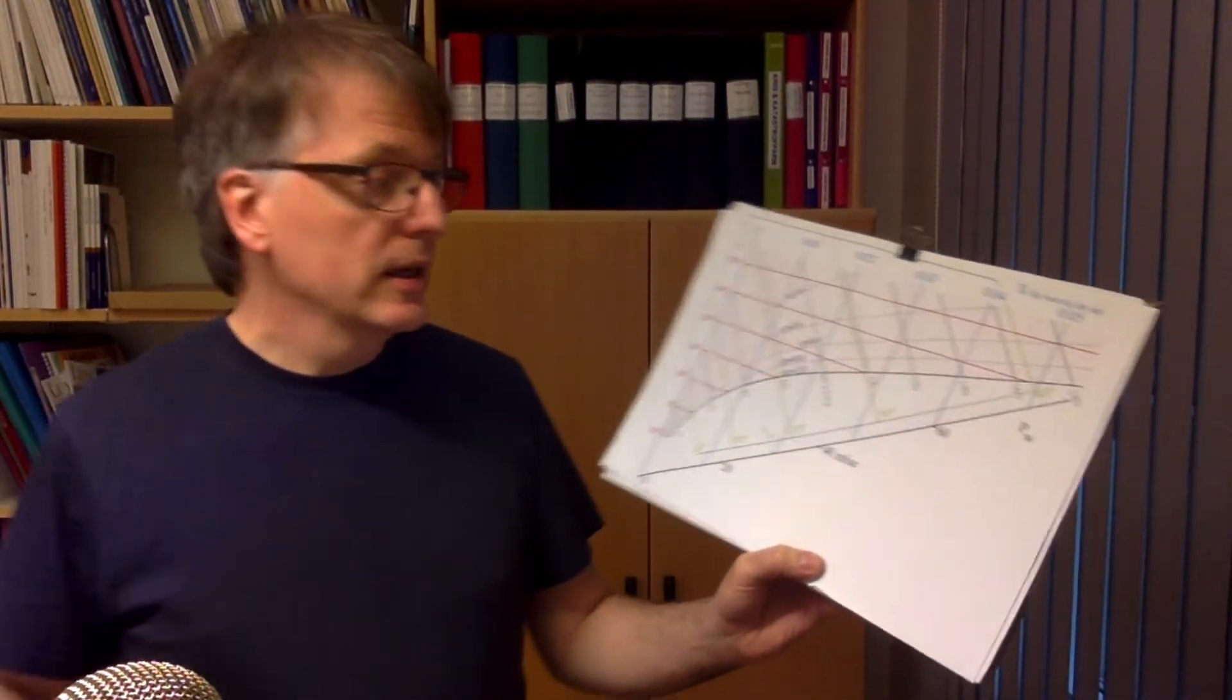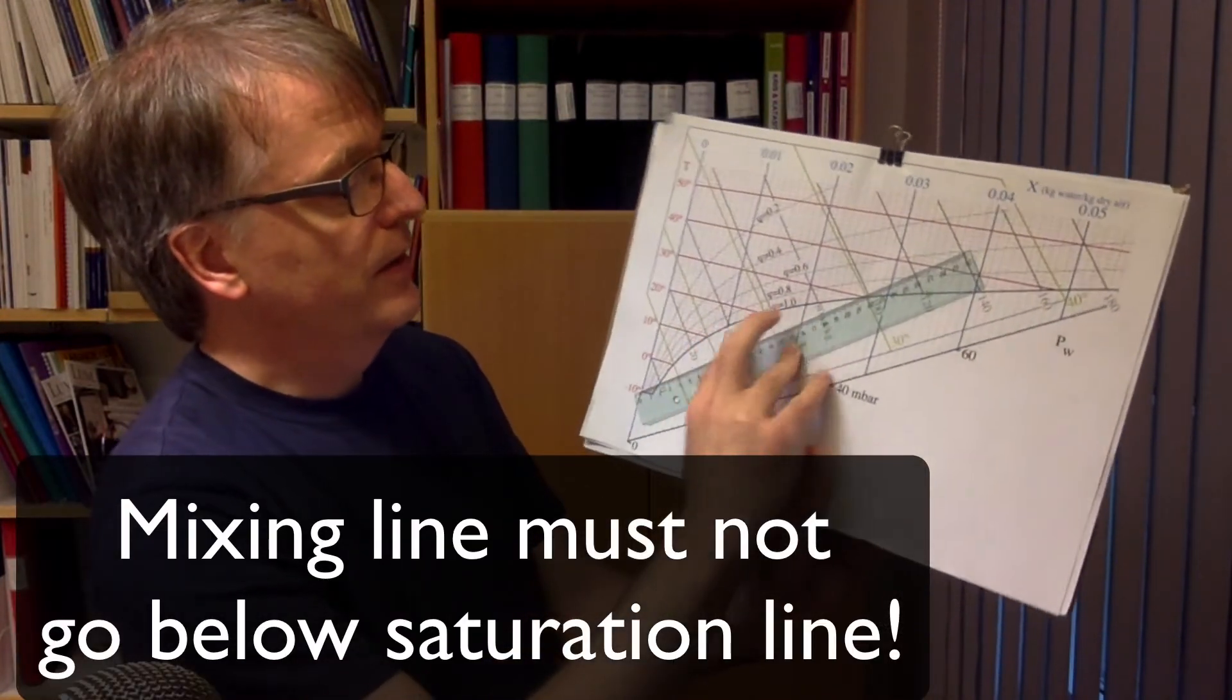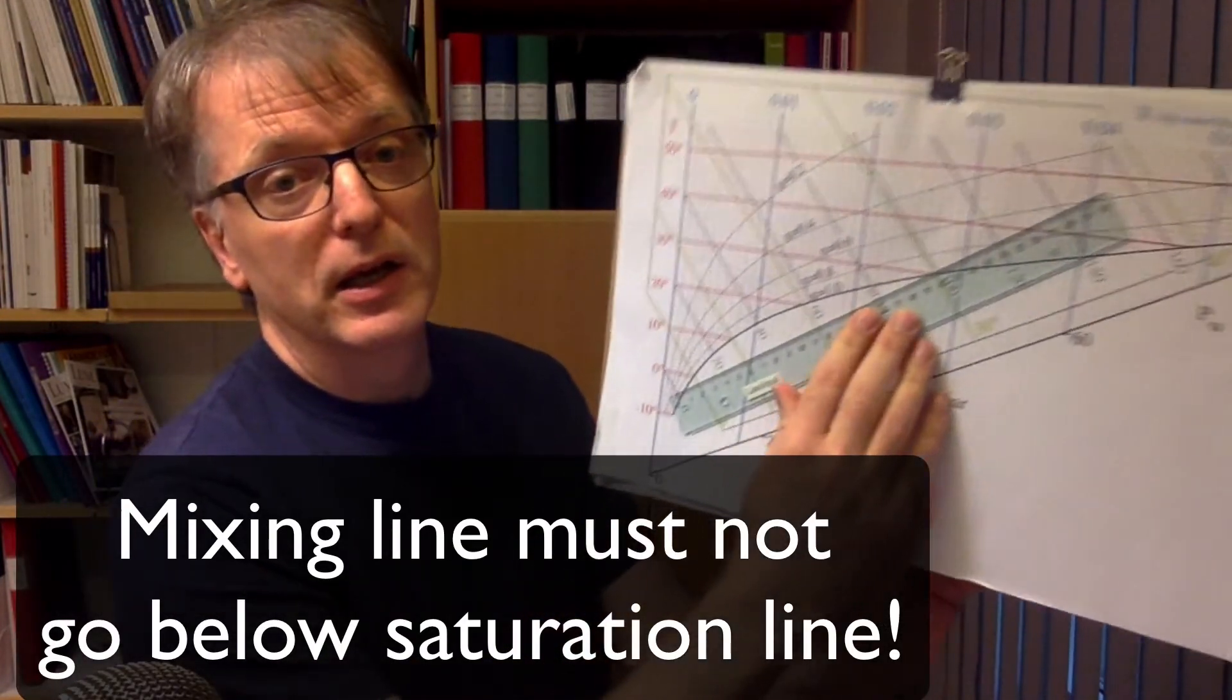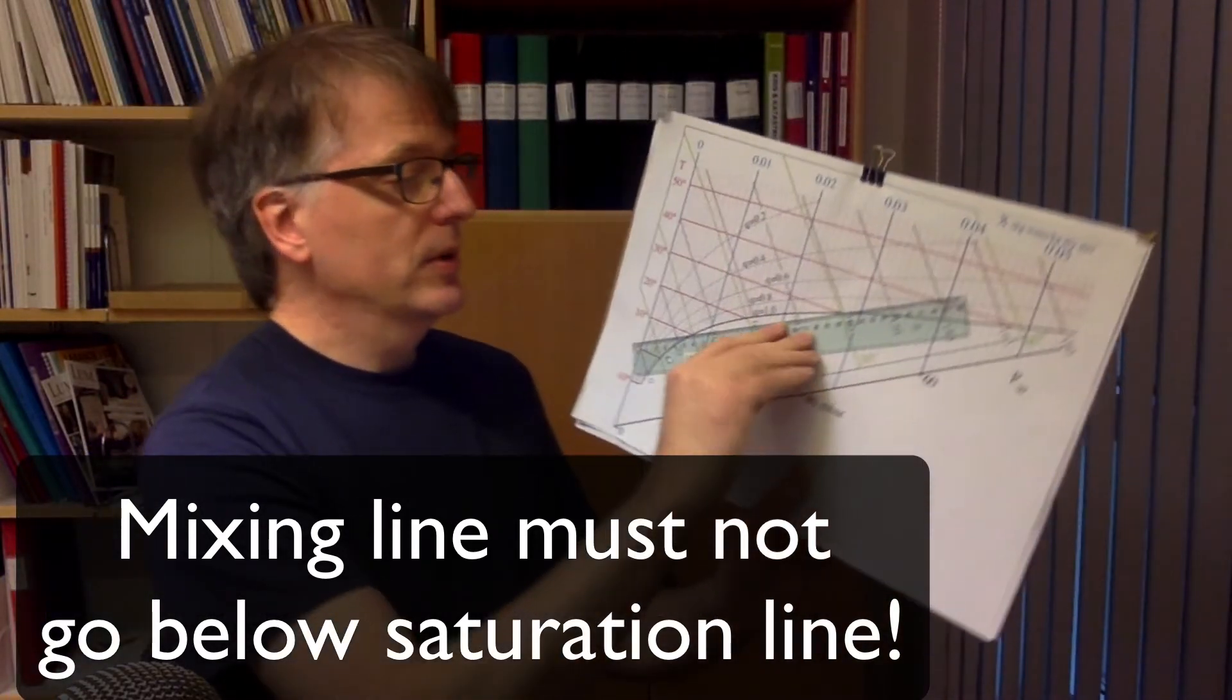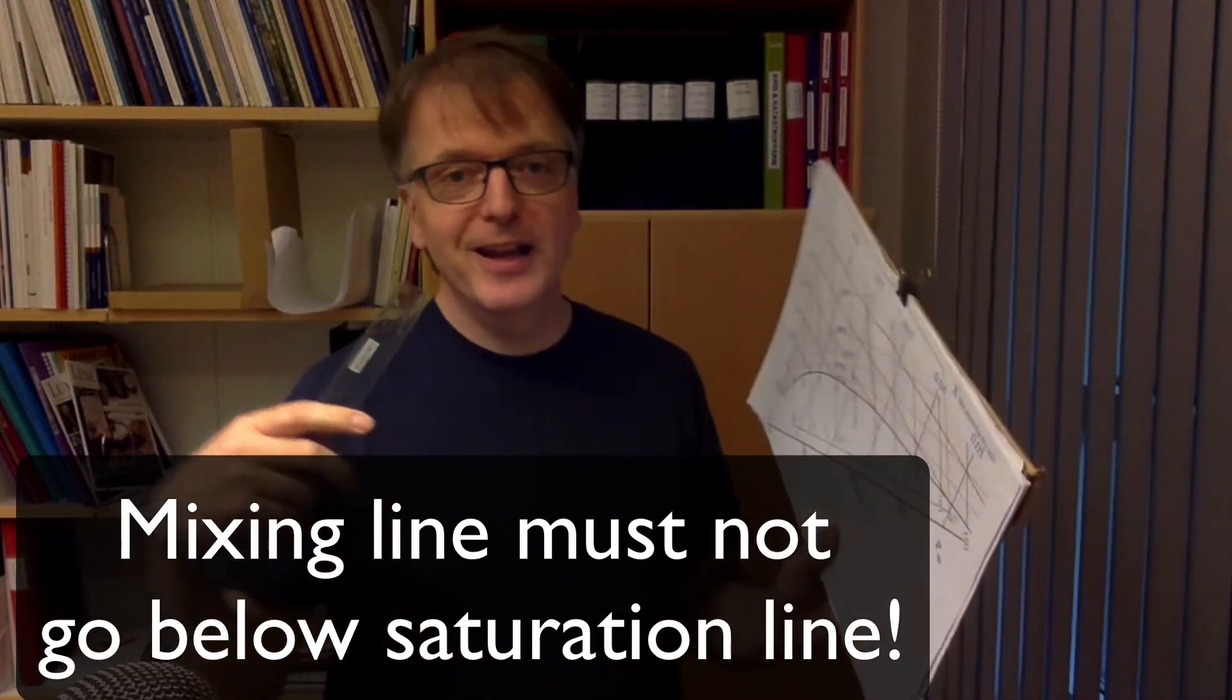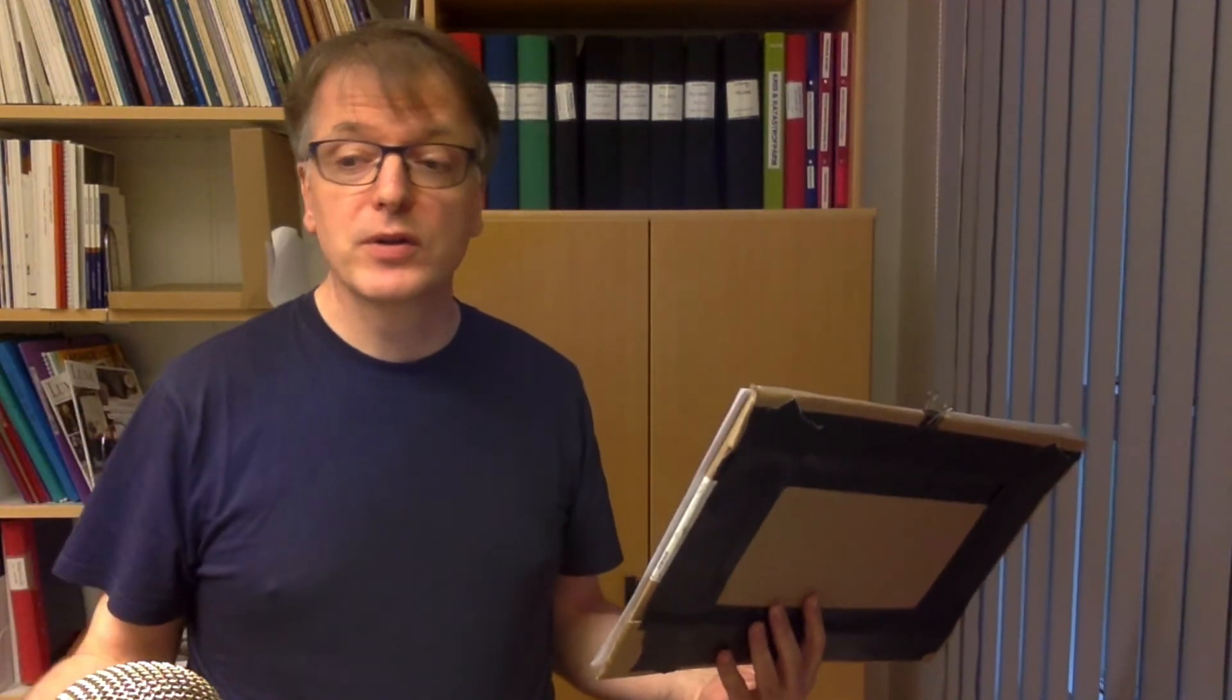An important thing here is that the mixing line should be above this 100% humidity line. So if the mixing line goes something like this then we're in trouble because then at certain mixture relations between the two air flows there is too much water and we will have condensation. And so if the mixing line goes below the 100% relative humidity line then we can't really be sure what happens.